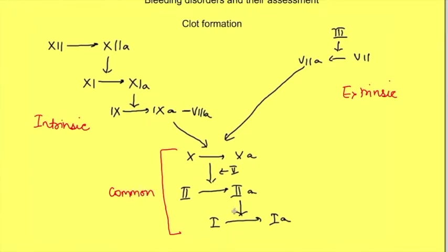Deficiency of any of these clotting factors can lead to decreased clot formation and bleeding. A very important cause is hemophilia, which occurs due to factor 8 and factor 9 deficiency. Factor 8 deficiency is known as hemophilia A and factor 9 deficiency is known as hemophilia B.